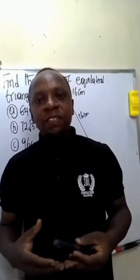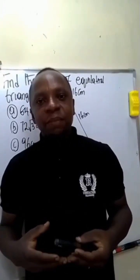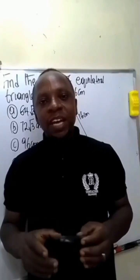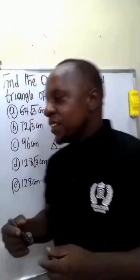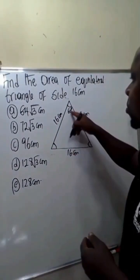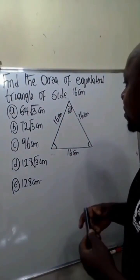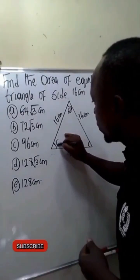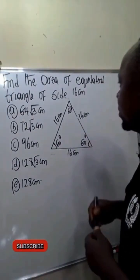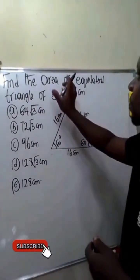Since all the angles are the same, it implies we are going to divide 180 by 3 to get each of the angles. This implies this angle will be 60 degrees because 180 divided by 3 is 60. This angle will also be 60 degrees, this angle will be 60 degrees.